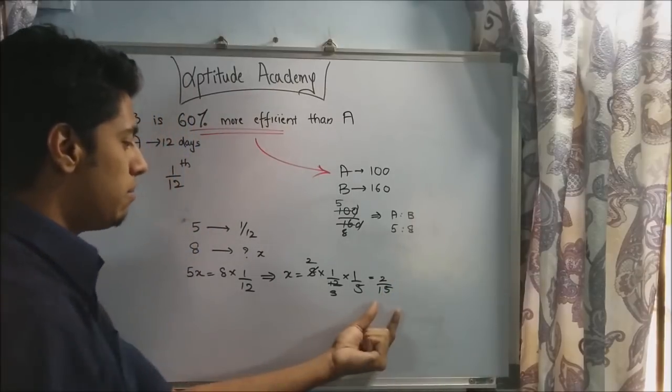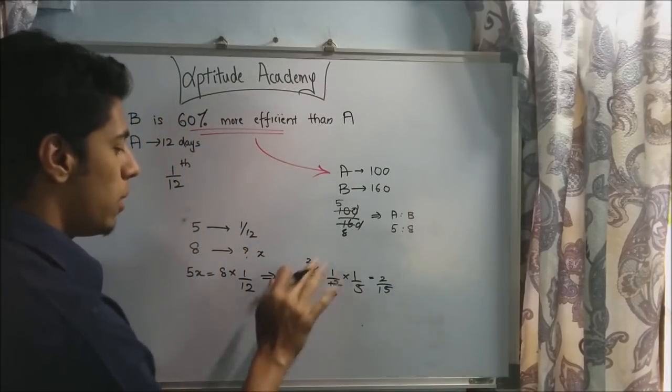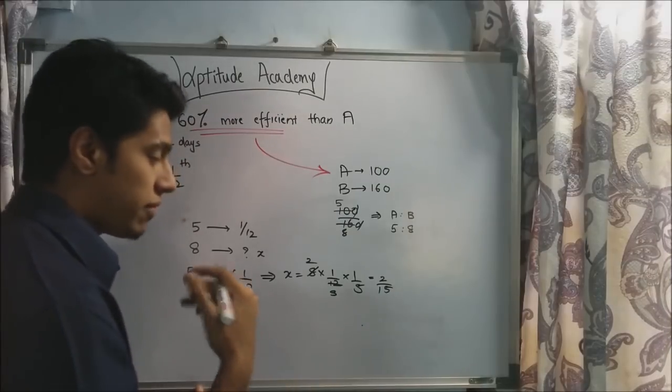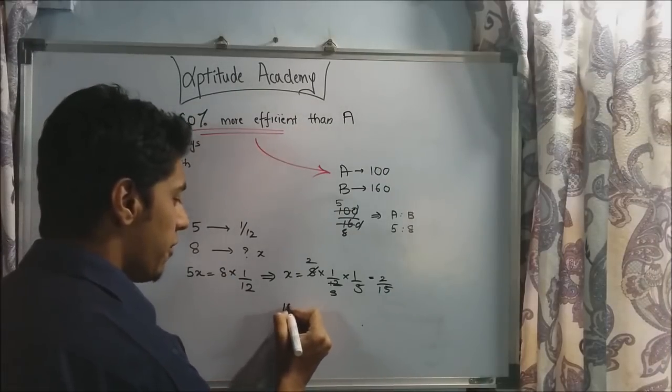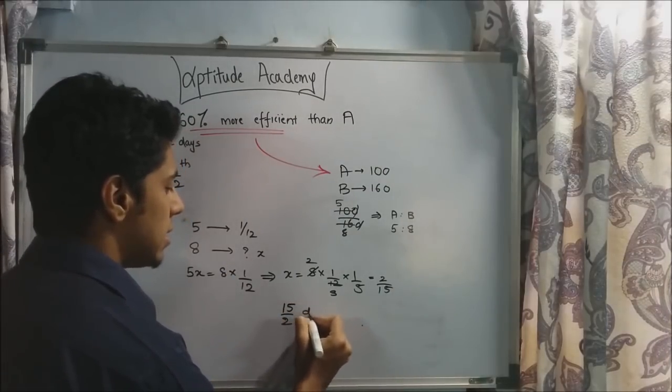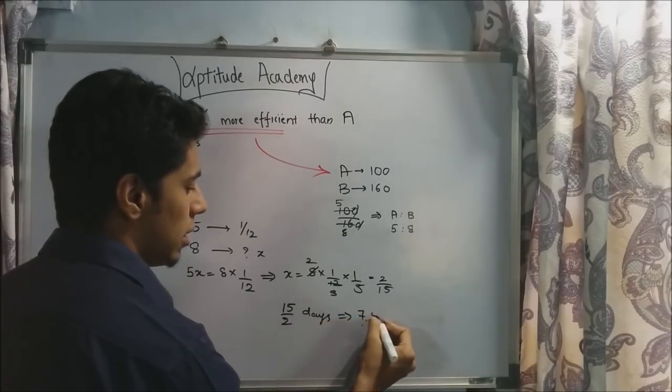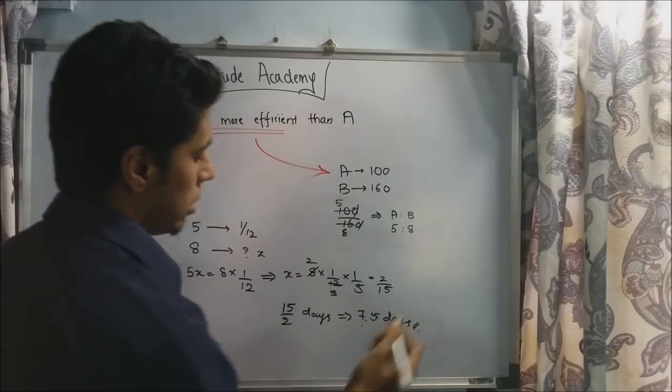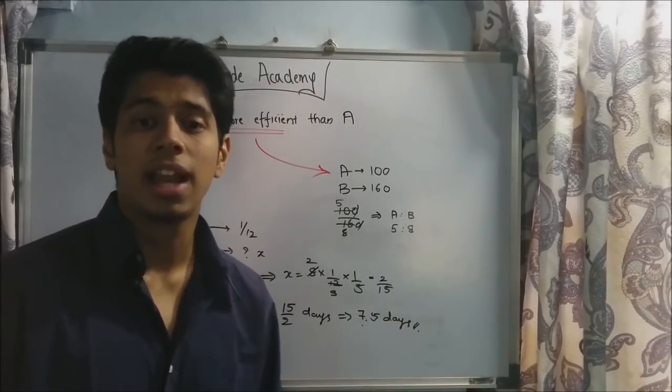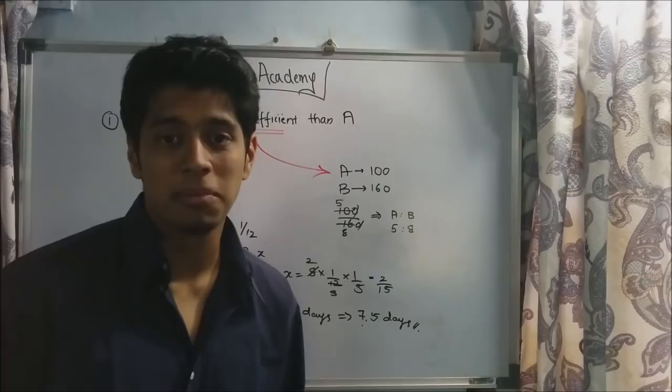This is the amount of work B finishes every day. So by rule of flip, we have to inverse it to give us the amount of time that B will take. So B will take 15 by 2 days or 7.5 days. If B works alone, he will take 7 and a half days to complete the work. Let's move to problem number 2.